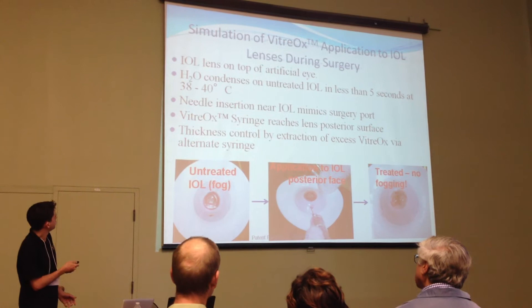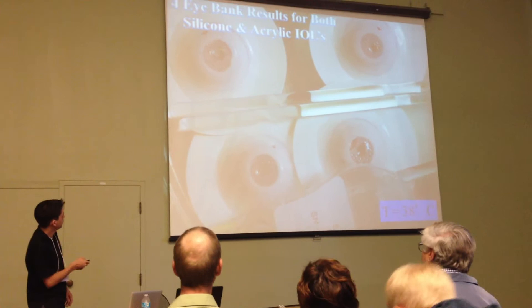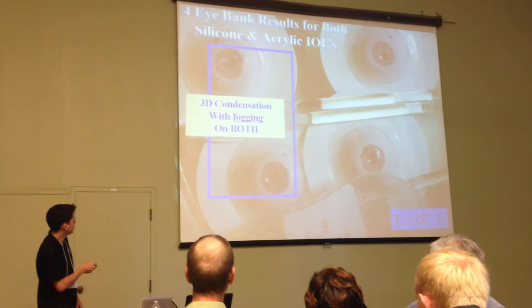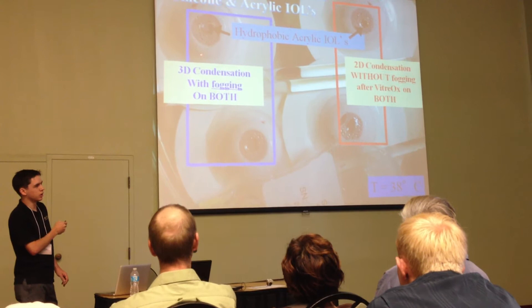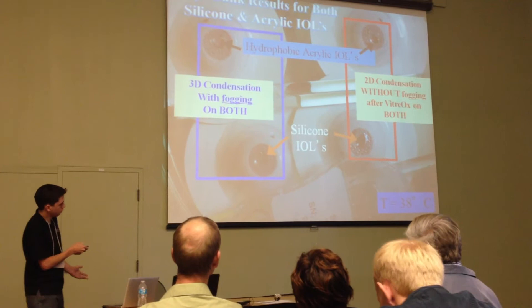We control the thickness of our film by extracting the excess Vitriox that is left behind. We test four lenses at a time — you can see condensation occurring, but fogging is not occurring. We tested both acrylic eyewells, which are less popular, and silicon eyewells, which are more popular and used more frequently. We have exactly what we expected: no fogging forming on our lenses.